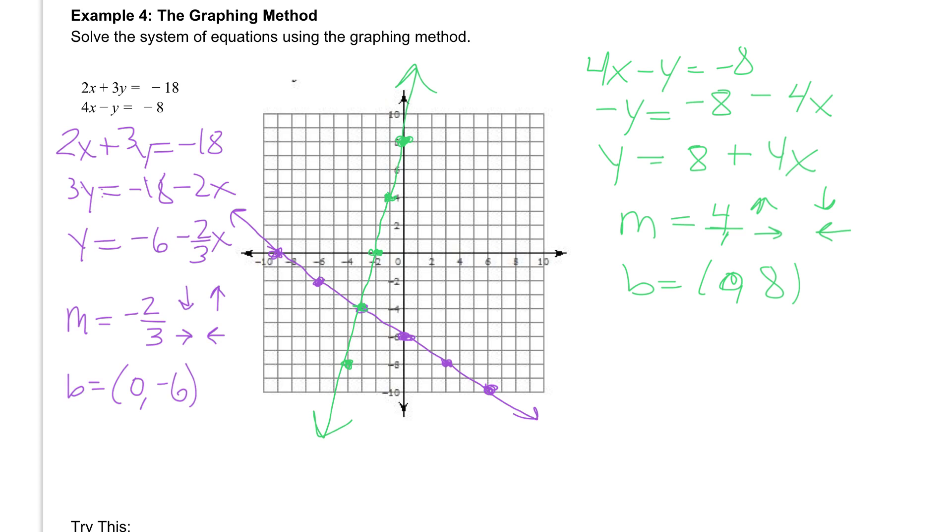And what we're looking for is where those two lines intersected, which is right here. And that's the point negative 3, negative 4. So we can say that our answer is negative 3, negative 4, where x is negative 3 and y is negative 4.